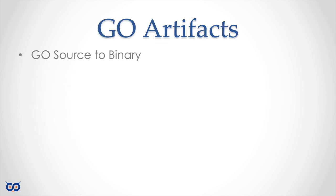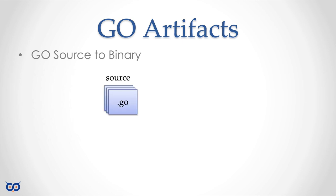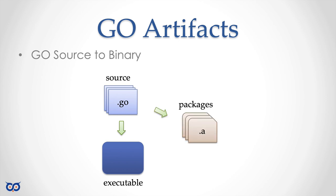Let's start with Go artifacts. In Go, you write Go source code and those get compiled into binaries. Go is a compiled language, so when you write source code, you feed it to a compiler and the compiler produces a binary. Your source code could be turned into an executable binary — a program or command that you can run — or it could be turned into a package.